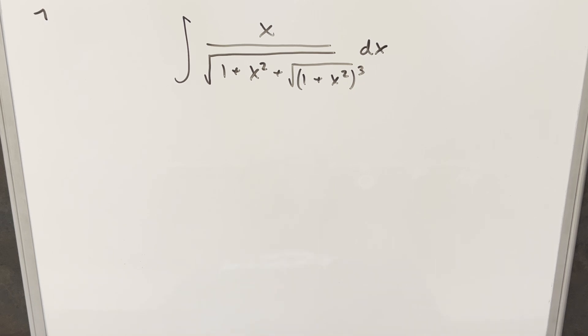Okay, we have another integral here today. This one's from the Florida Integration B from 2012, problem 7. We have the integral of x over the square root of 1 plus x squared plus the square root of 1 plus x squared all cubed dx.